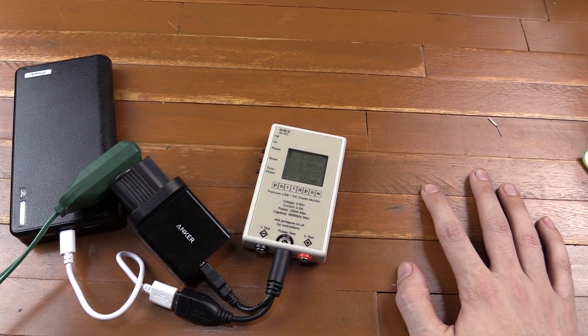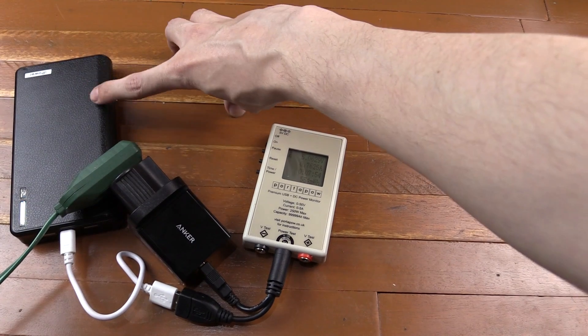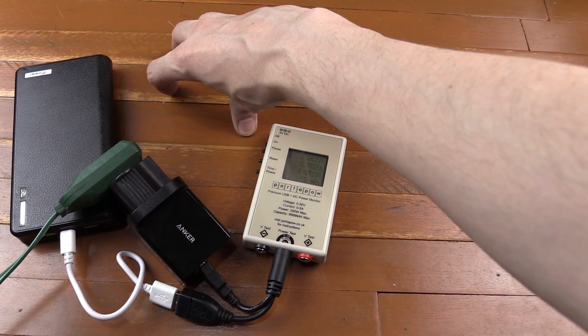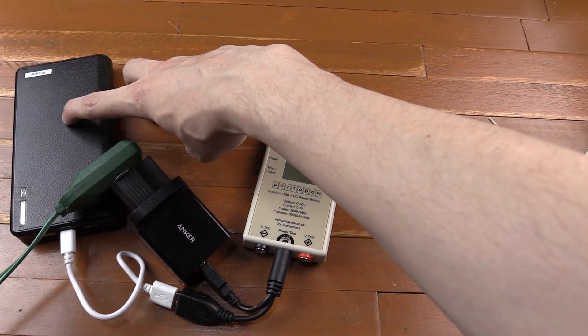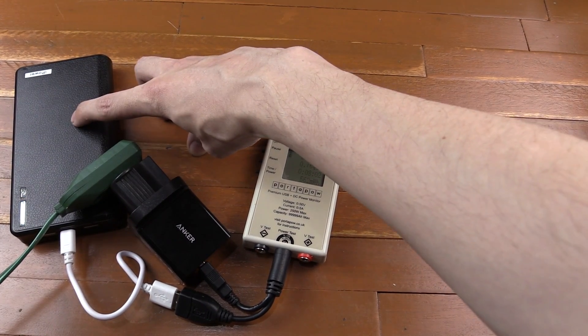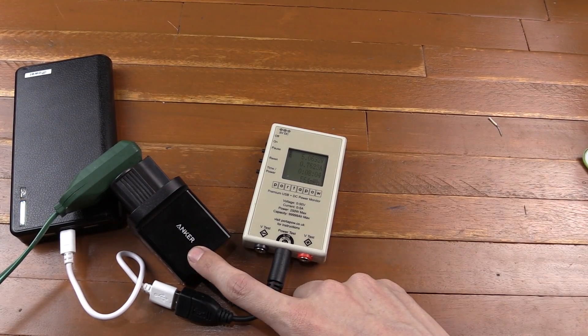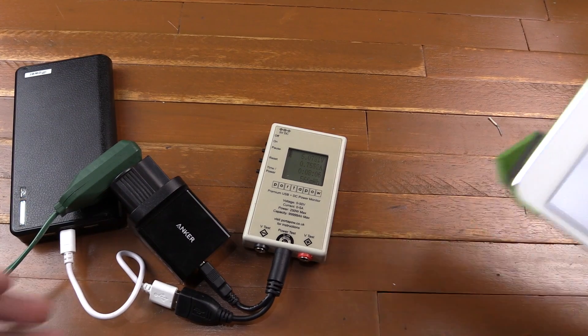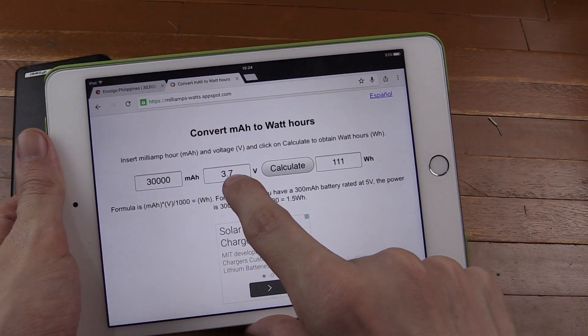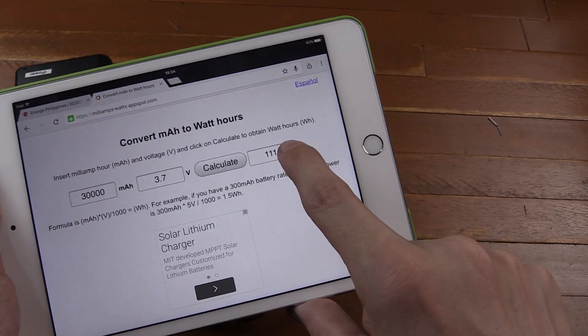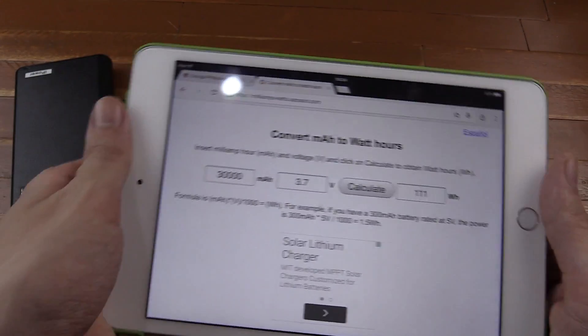Now one thing I've mentioned in a previous video about measuring the capacity of power banks is that that 30,000 mAh rating is based on the internal voltage of the batteries, which is only 3.7 volts. But we're charging at 5 volts. So why does that matter? Well, if you look at this little calculator here, you can see if I put in 30,000 mAh with a voltage of 3.7 volts, that works out to 111 watt-hours.